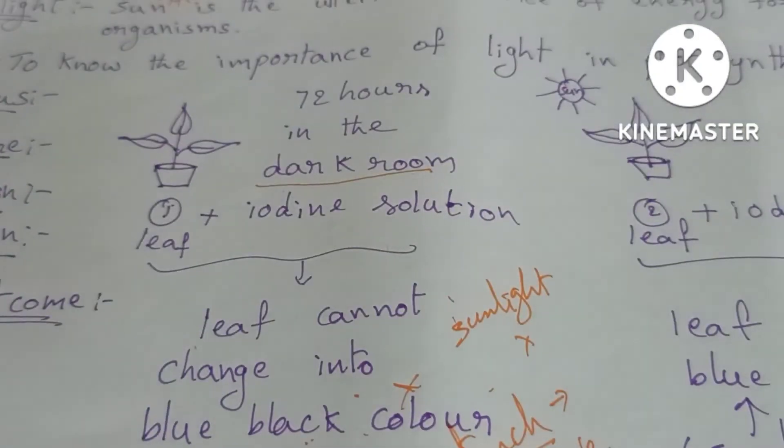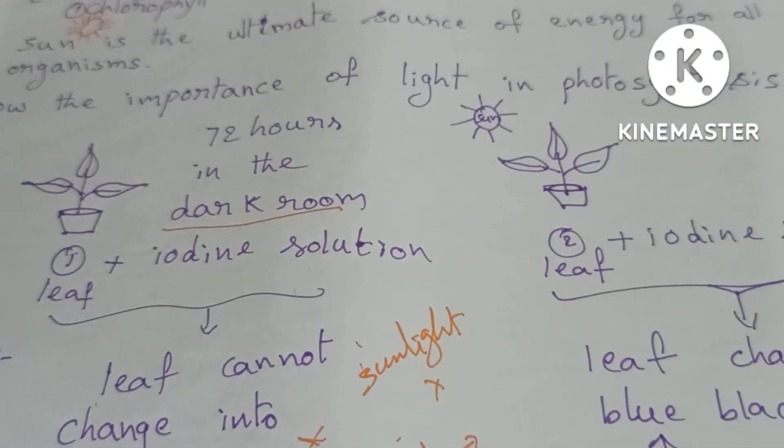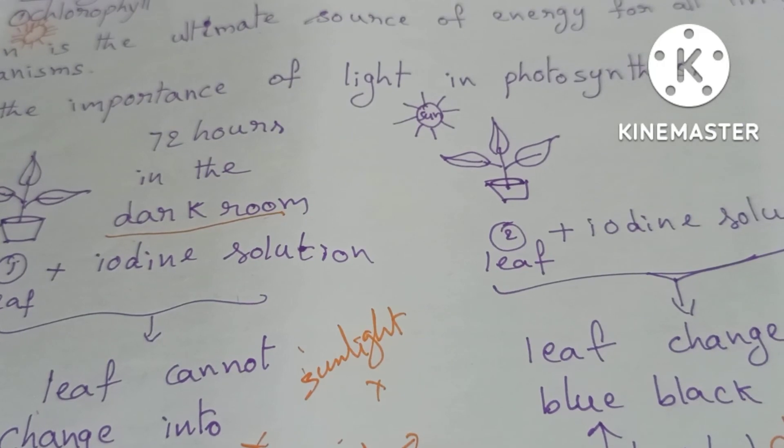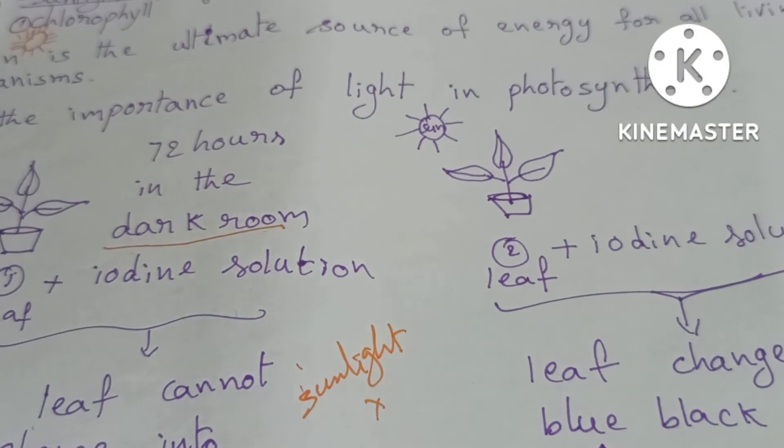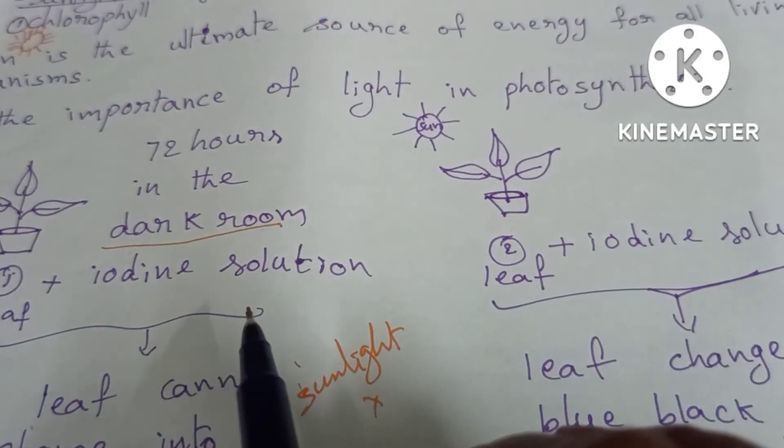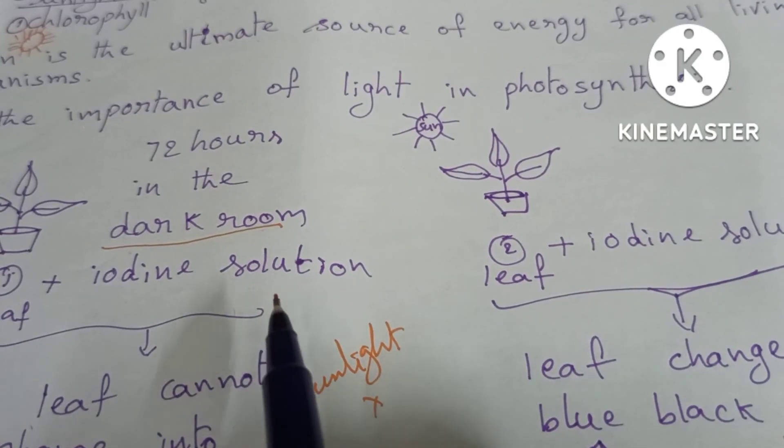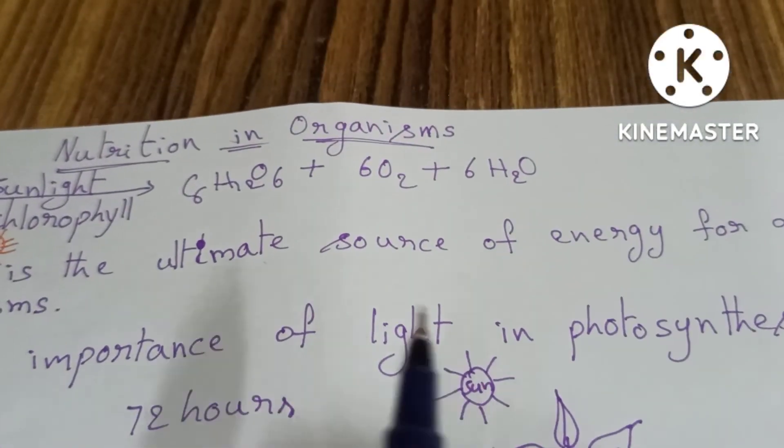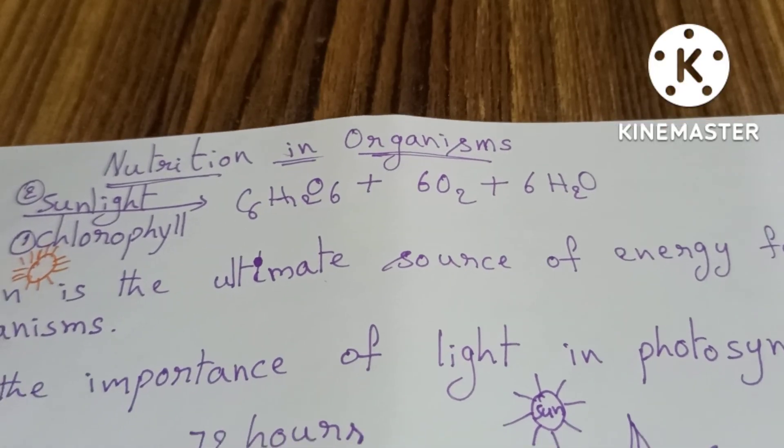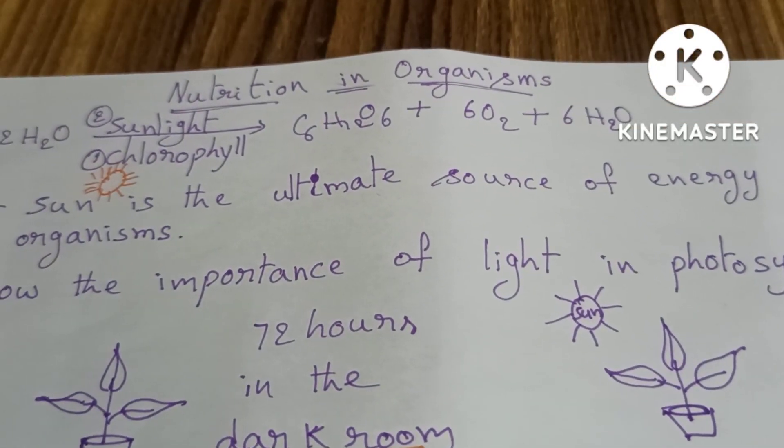Through all this experiment we can conclude that sunlight is very essential for photosynthesis. Sunlight is very important. I hope you all understand this topic.